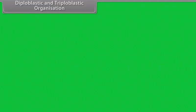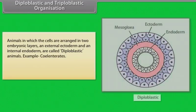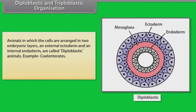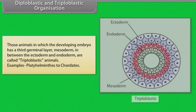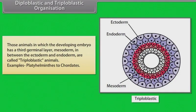Diploblastic and triploblastic organization: Animals in which cells are arranged in two embryonic layers — an external ectoderm and an internal endoderm — are called diploblastic animals. Example: Coelenterates. An undifferentiated layer, mesoglea, is present between the ectoderm and endoderm. Animals in which the developing embryo has a third germinal layer, mesoderm, in between the ectoderm and endoderm are called triploblastic animals.